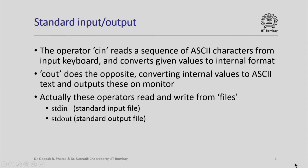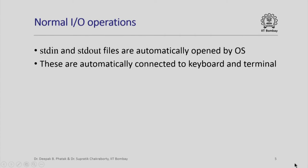These two standard files are called stdin and stdout, to represent standard input file and standard output file. The normal input/output operations are conducted by the operating system using stdin and stdout. These files are automatically opened by the operating system. More importantly, these are automatically connected to keyboard and terminal by the operating system.